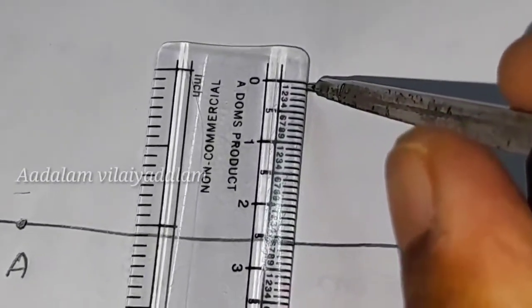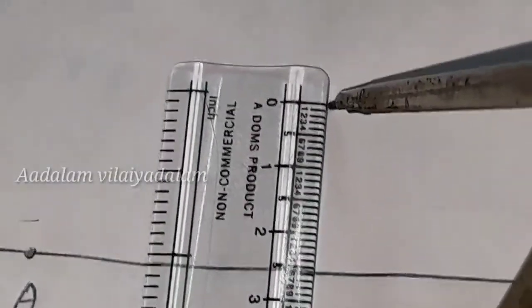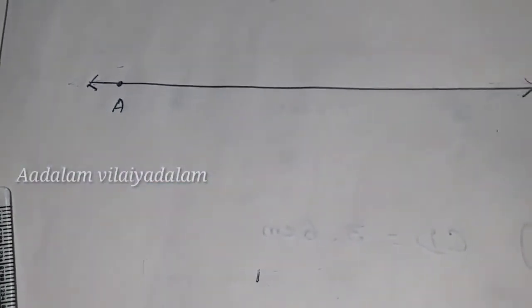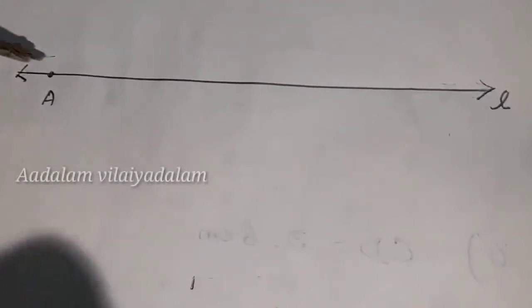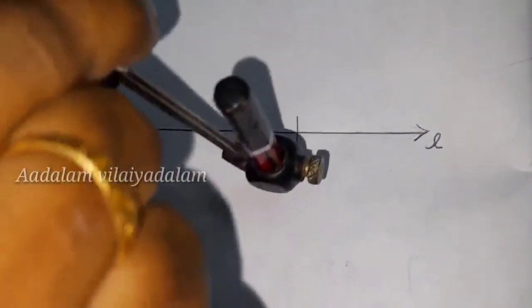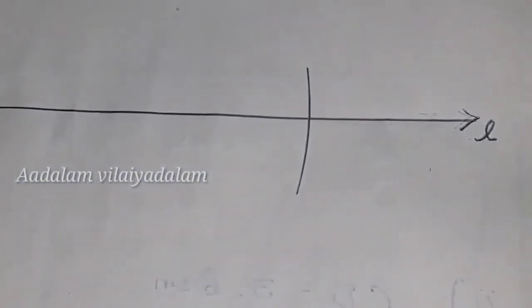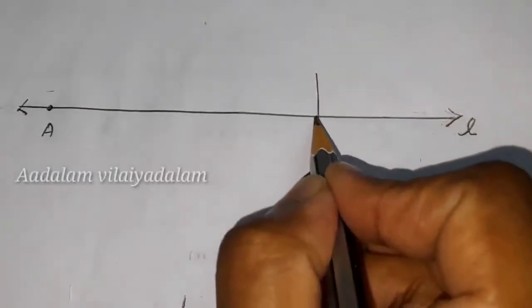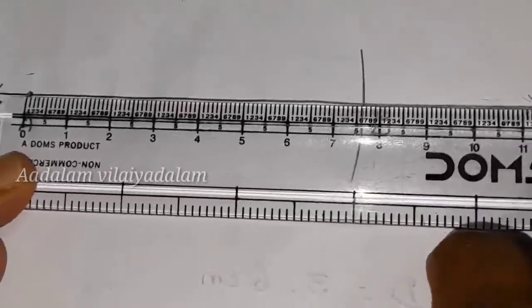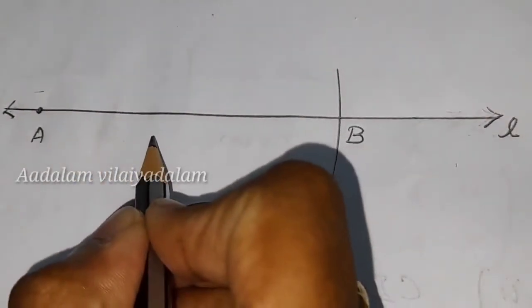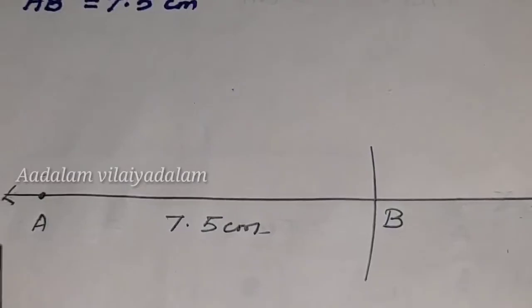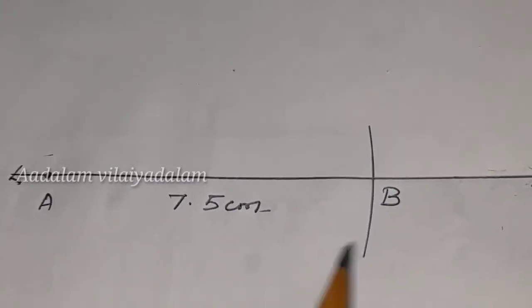So this is 7.5. Place the pointer of the compass at 0 and pencil at 7.5. Now place the pointer of the compass at A and make a small arc to get the point B. The distance between A and B is 7.5 only. So AB equal to 7.5 cm. AB is the required line segment of length 7.5 cm.